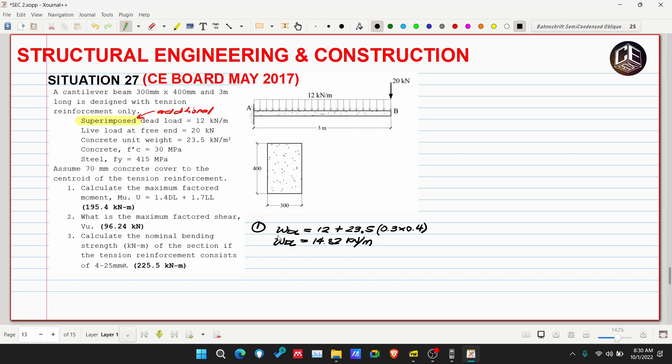So our WDL is 12 plus 23.5 multiplied by 0.3 by 0.4, equals 14.82 kN per meter. And our live load is a point load of only 20 kN. Now we can solve for our Mu.